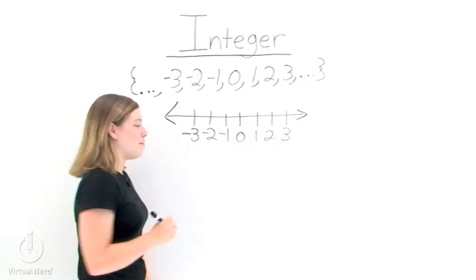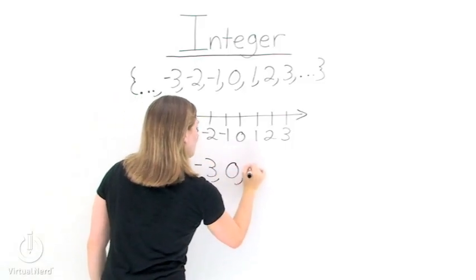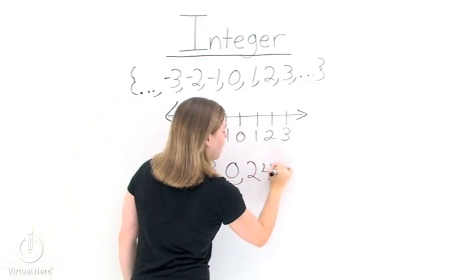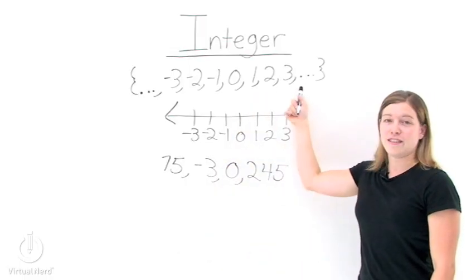So now let's look at some numbers. 75, negative 3, 0, and 245. All of those numbers are integers because they're all an element of this set.